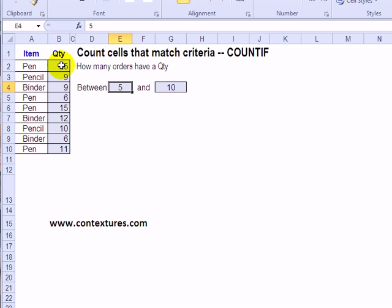And in this case we're going to count the quantities that are in a certain range of numbers. So we've typed those numbers on the worksheet. So we'd like anything where the quantity is between 5 and 10.